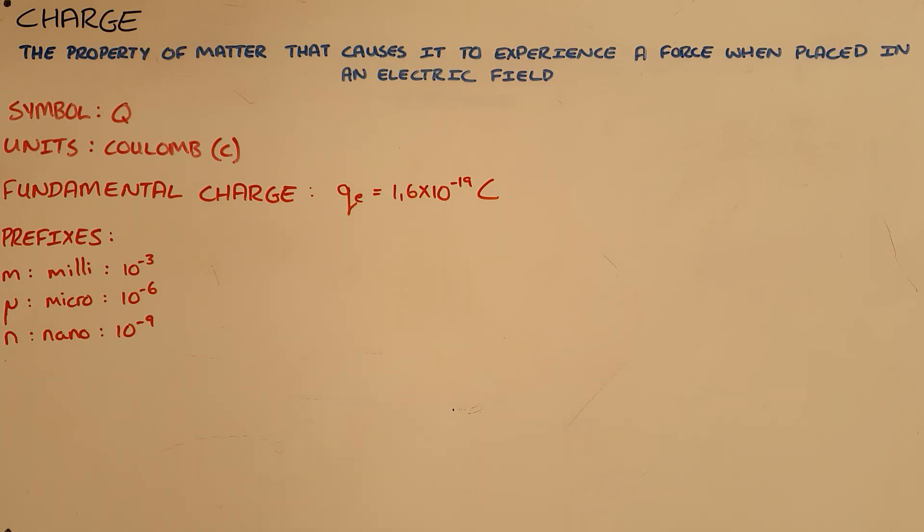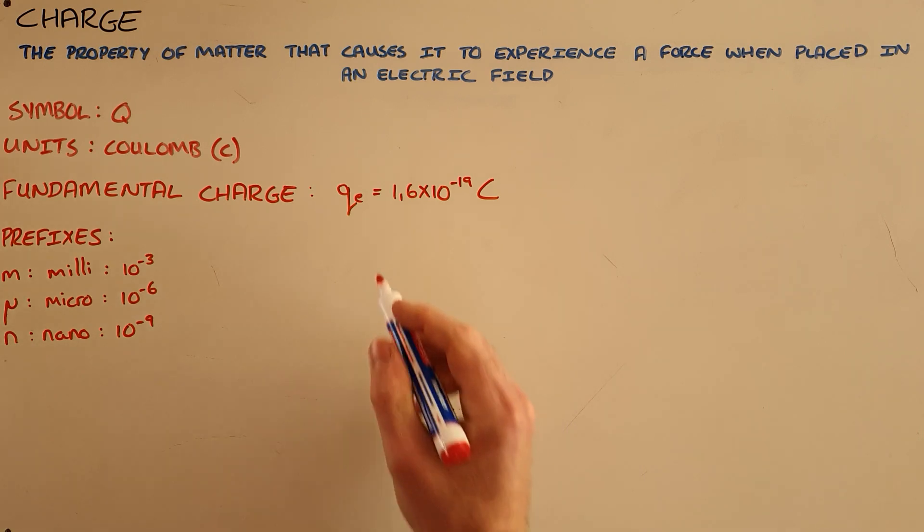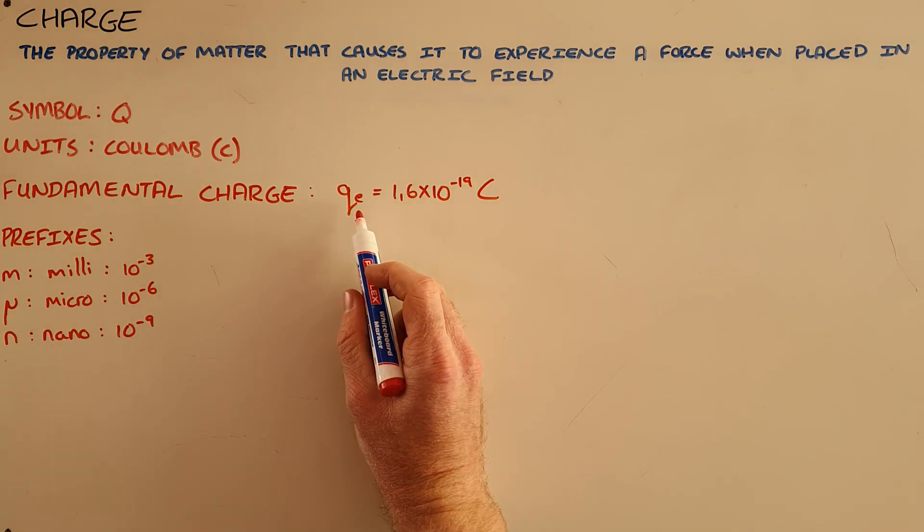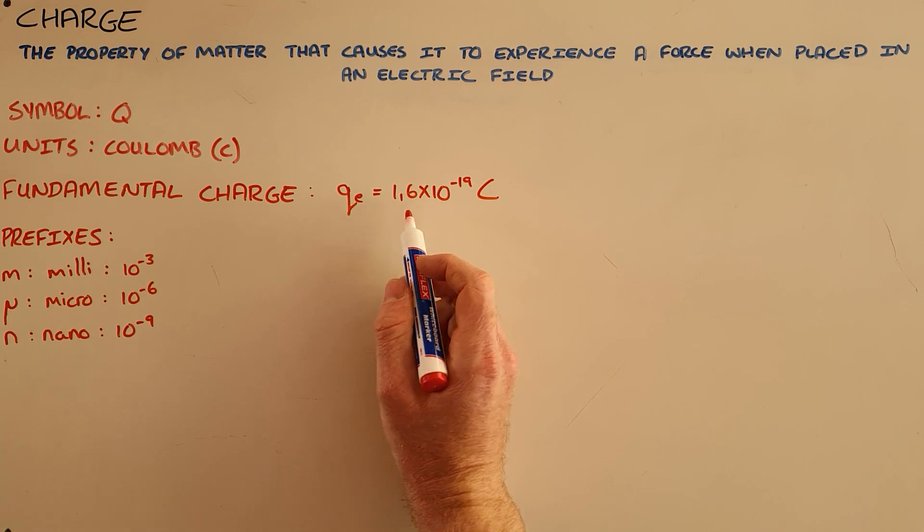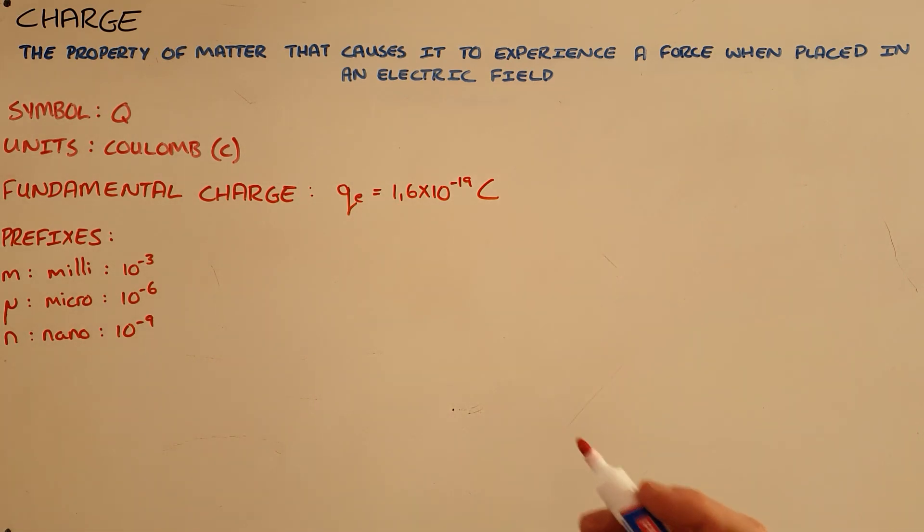We would often say that charge is quantized, meaning that it comes in discrete units or that there is a minimum amount of charge that is possible. That is called the fundamental charge, which has the value of 1.6 times 10 to the minus 19 coulombs.